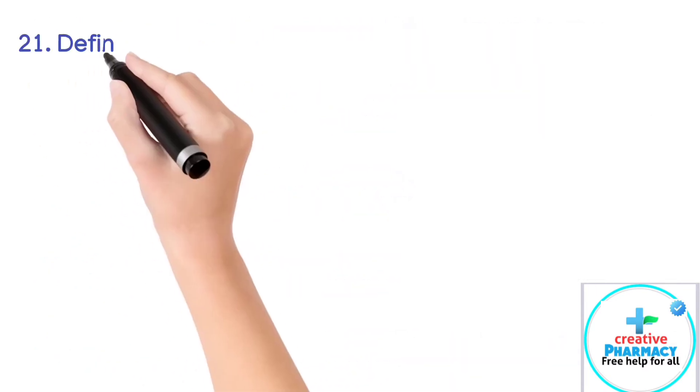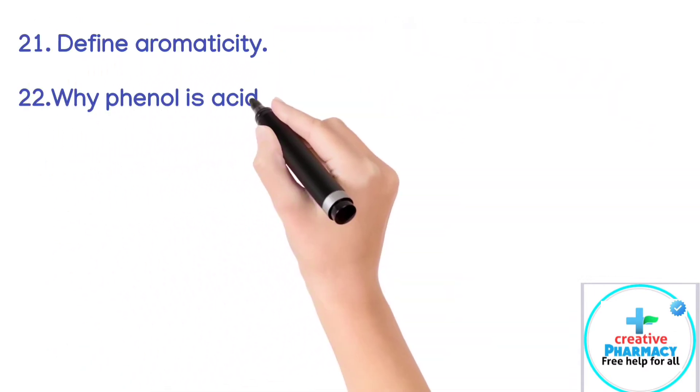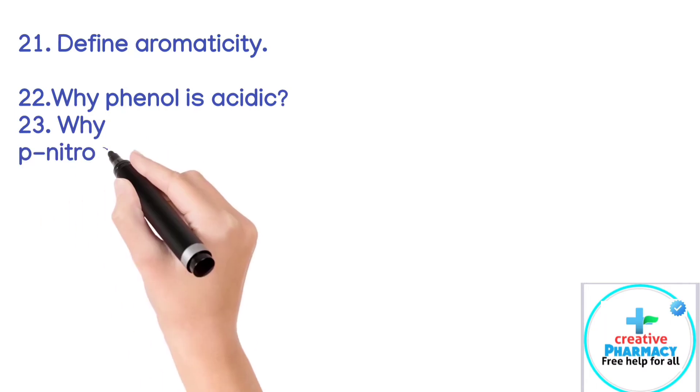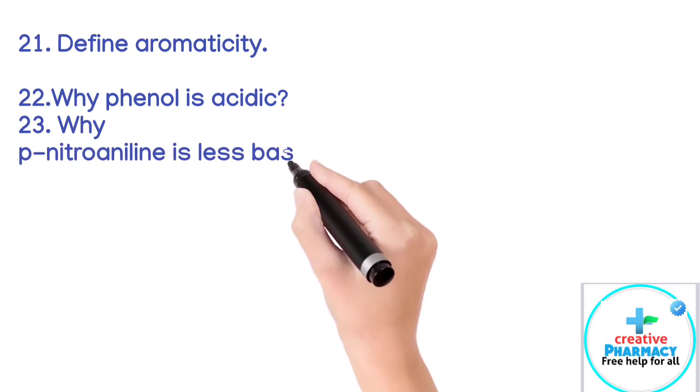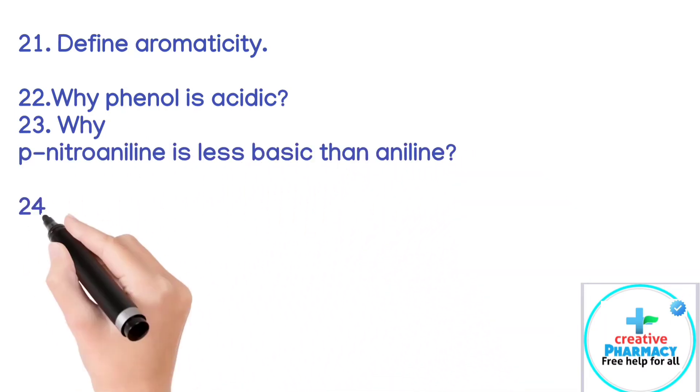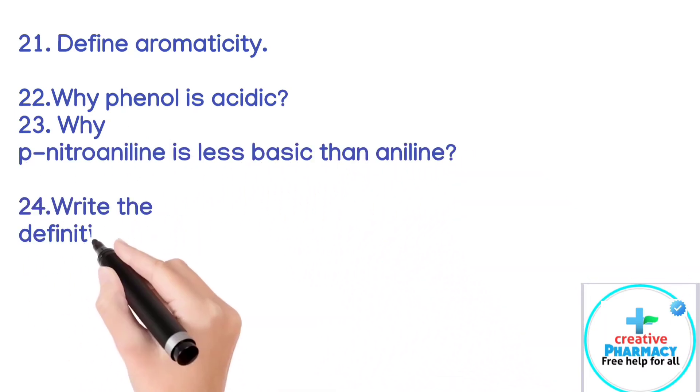Question 21: Define aromaticity. Question 22: Why is phenol acidic? Question 23: Why is p-nitroaniline less basic than aniline?